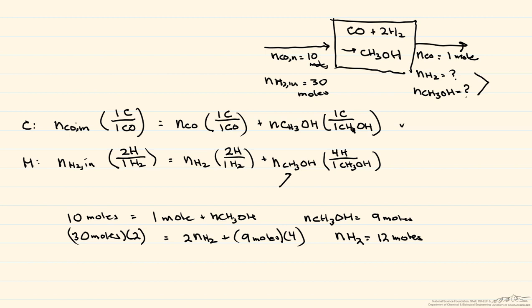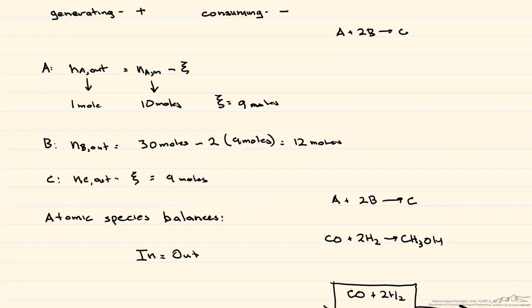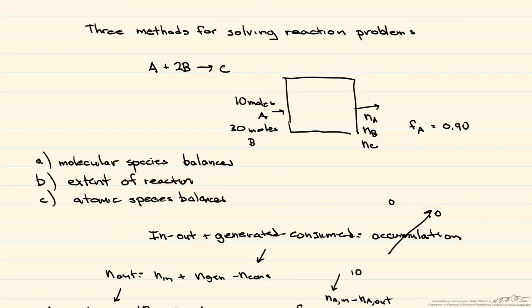As for which method to use: unless told differently, use the method most comfortable for you. I tend to use the atomic species balance for multiple reactions, because we never use the stoichiometry of the reaction directly. The extent of reaction or molecular species balances work well for a single reaction — it's up to you.